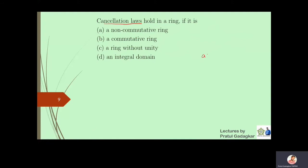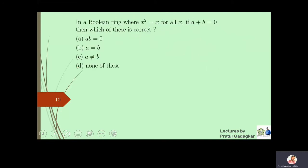The next question is: cancellation laws hold in which type of ring? We know that if ab = ac and we want to conclude that b = c, this is the cancellation law. For this to hold, the ring must not have zero divisors, which means the ring must be an integral domain.